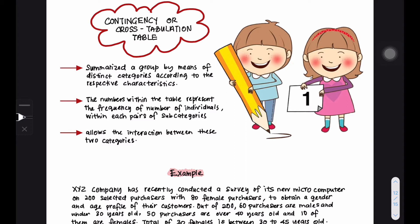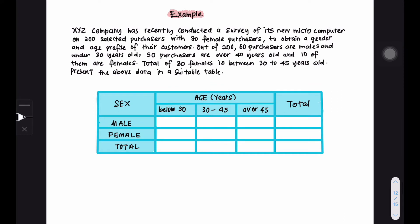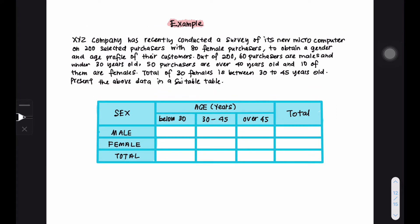Let's see the first example. XYZ company recently conducted a survey of its new microcomputer on 200 selected purchasers. The total number of purchasers surveyed is 200. From this 200, there are 80 female purchasers — to obtain a gender and age profile of their customers. That means we have 120 male purchasers.